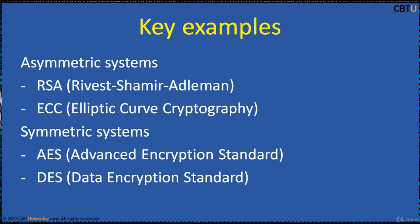Examples of asymmetric key systems are RSA (Rivest, Shamir, Adleman), ECC (Elliptic Curve Cryptography). Symmetric systems include DES and AES.